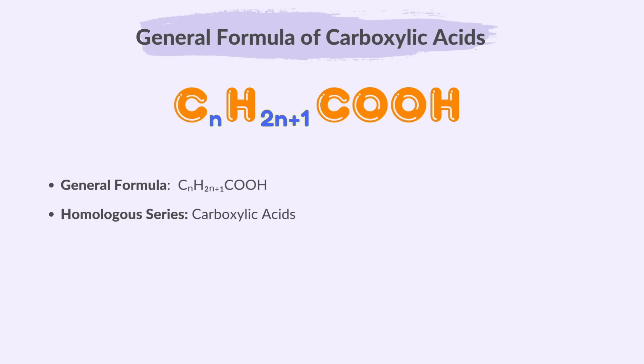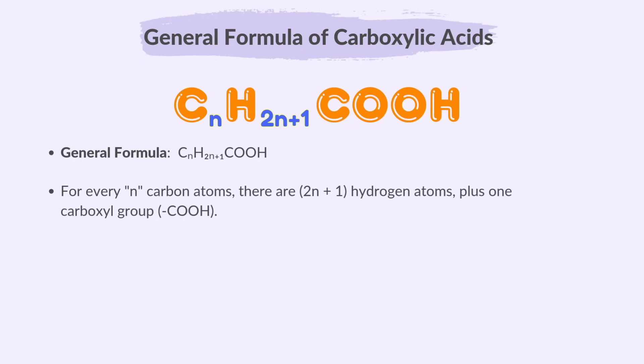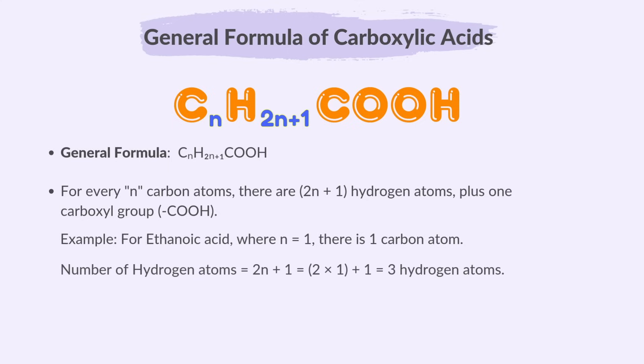The general formula of carboxylic acids is CnH2n+1COOH. Carboxylic acids contain a COOH, or carboxyl group. For every n carbon atoms, there are 2n+1 hydrogen atoms plus 1 carboxyl group. For example, for ethanoic acid where n=1, there is 1 carbon atom. The number of hydrogen atoms is 2(1)+1 = 3, so ethanoic acid is CH3COOH. Therefore, each general formula follows a specific pattern that fits all compounds in its homologous series.